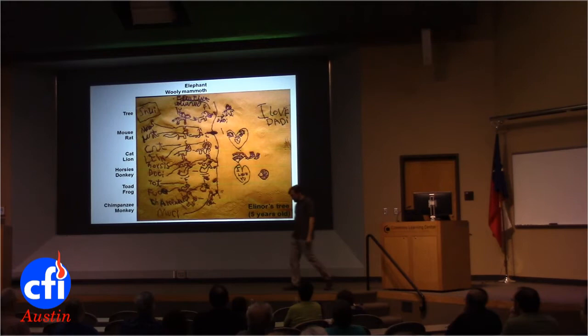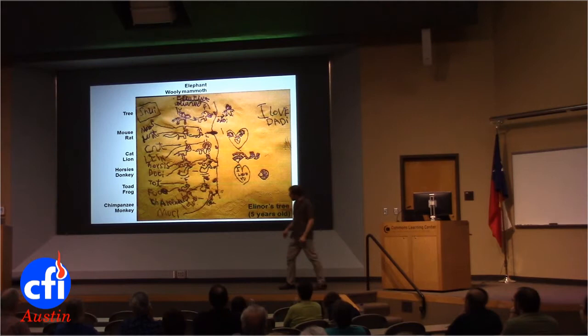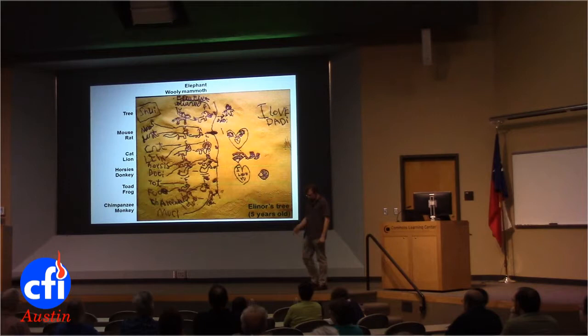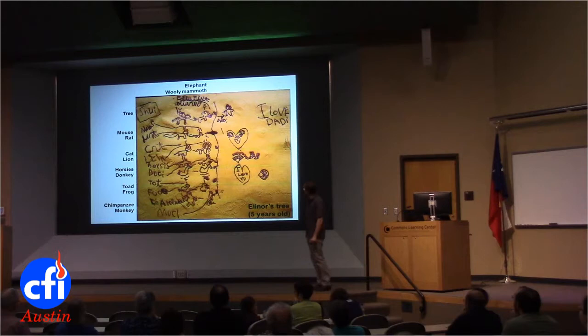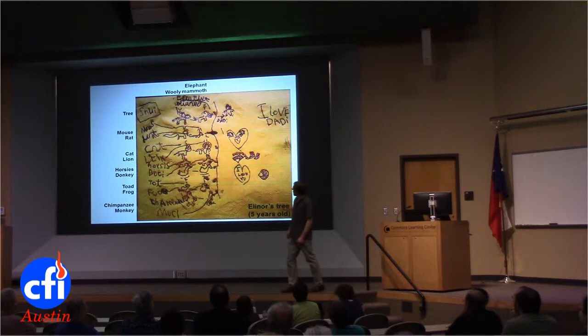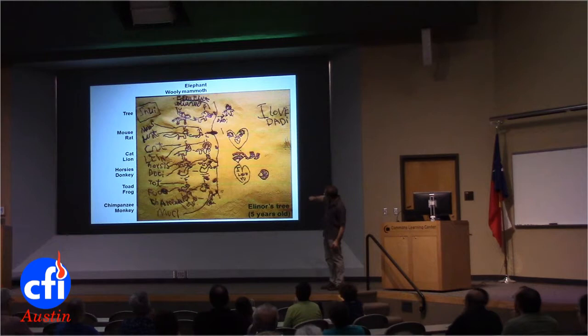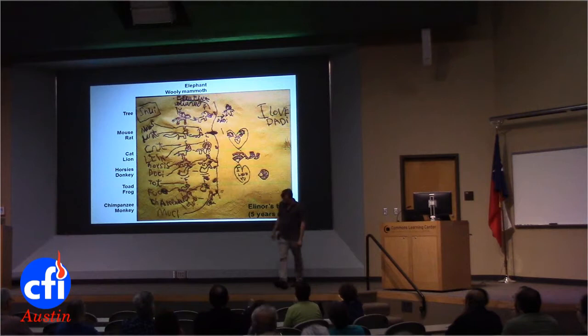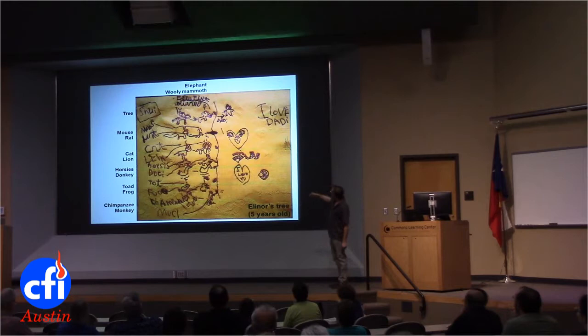So I'm going to go ahead and end here. These theories — Darwin's theory and all the follow-up theories over the years — are basically bread and butter for us. We use evolution all the time to discover new drugs and genetic causes of disease. I think they really inform many aspects of our life. I'll leave you with this napkin that my daughter drew when she was five years old — a tree of life with mouse, rat, cat, lion, horses, donkeys, toads, frogs, chimps, elephants, woolly mammoths — and apparently dad is related to woolly mammals. I'll stop there and take questions.